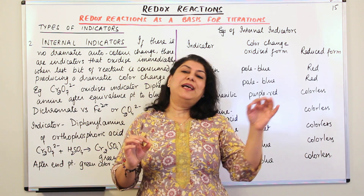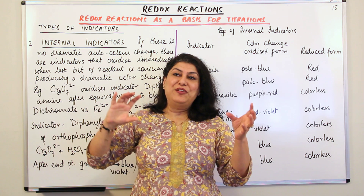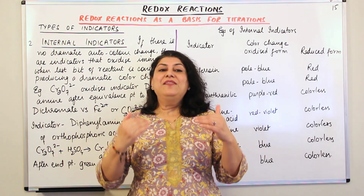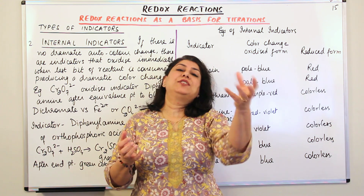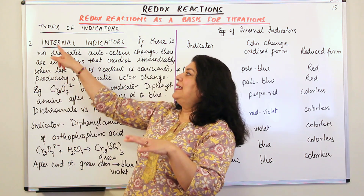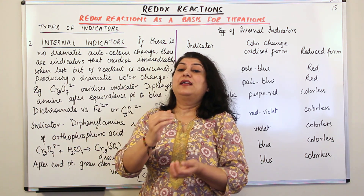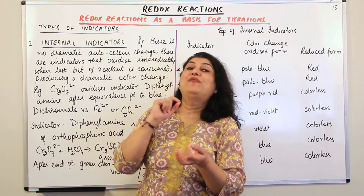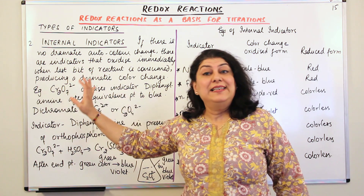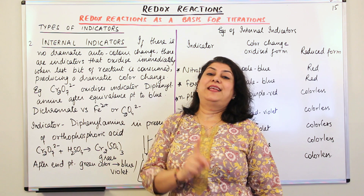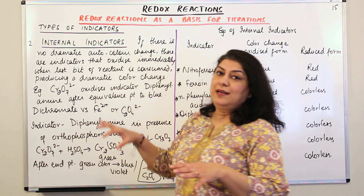In those reactions we add a substance to the reaction mixture that acts as an indicator. Since we add it to the reaction mixture, we call it an internal indicator — similar to how in acid-base titrations we use a drop of phenolphthalein. You add the indicator into the reaction mixture, and such an indicator is known as an internal indicator, but it is not a self indicator — it is not one of the reactants itself undergoing a change in color.